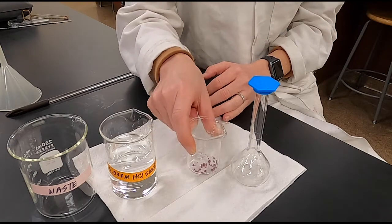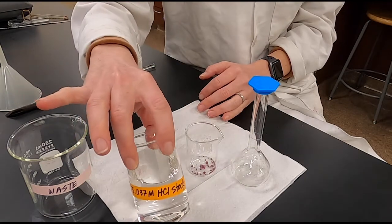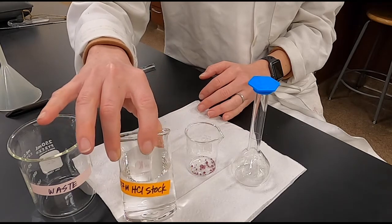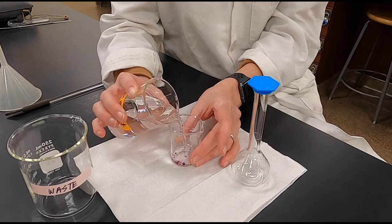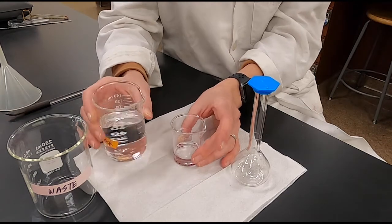To prepare our solution, we're going to add approximately 20 milliliters of our hydrochloric acid stock solution. This is just to dissolve it so that it'll make it easier for us to transfer it to the volumetric flask.